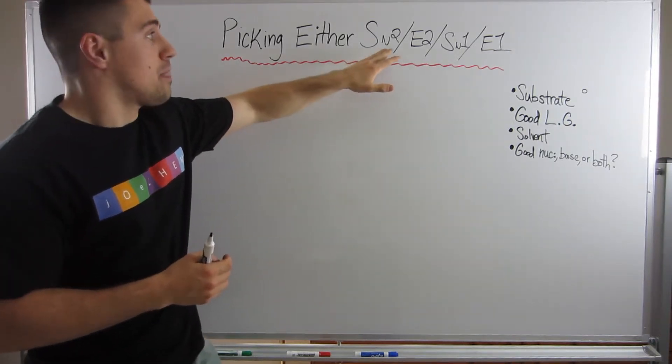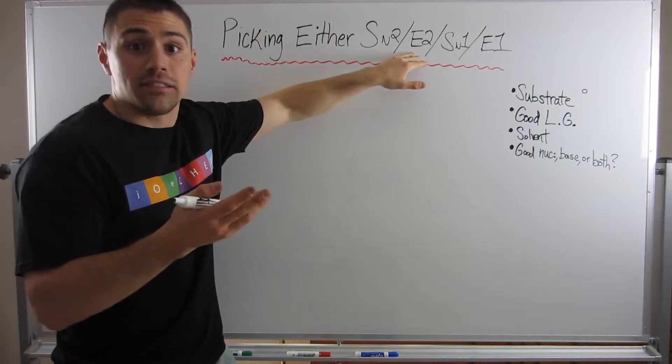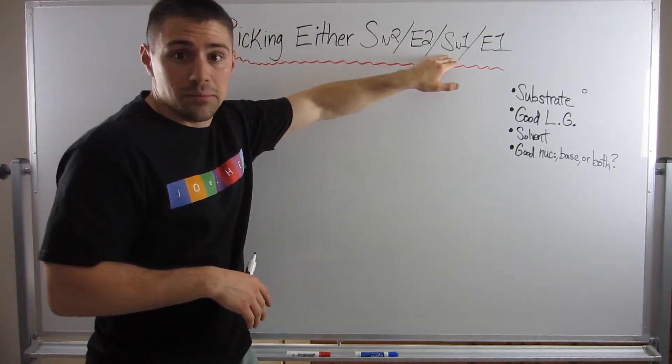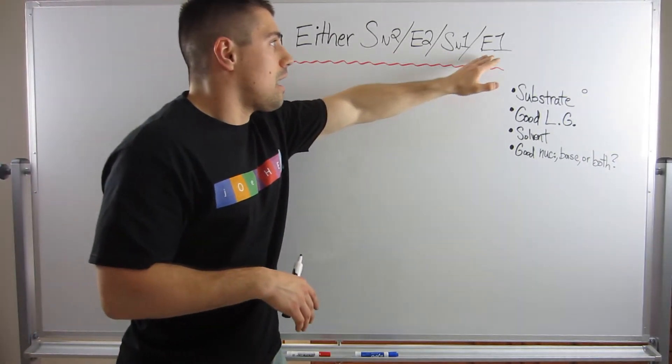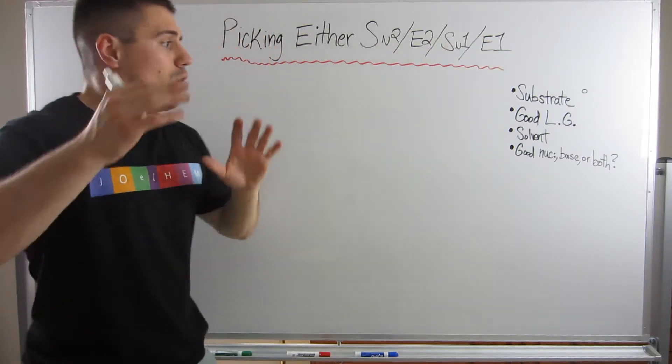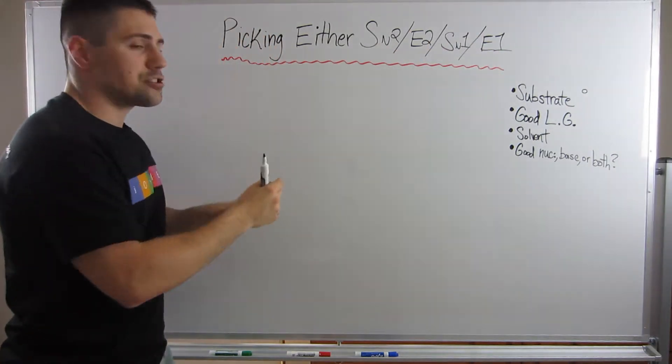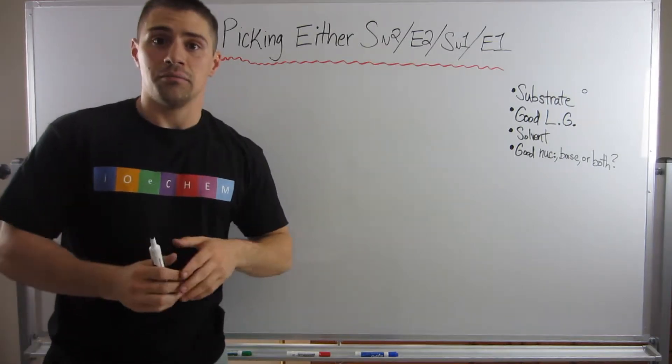Inversion of stereochemistry, anti-periplanar considerations, gives us racemic mixtures, and not so much with that. But you'll see, it's just going to be reaction after reaction, and we're going to get through this together.